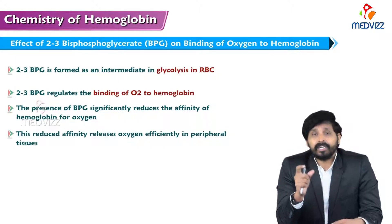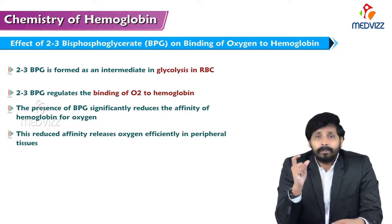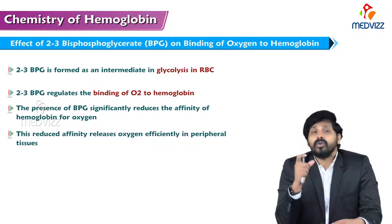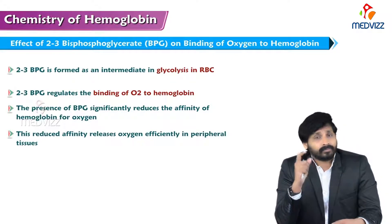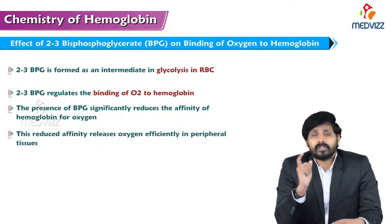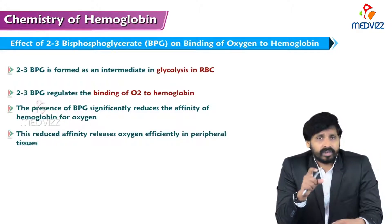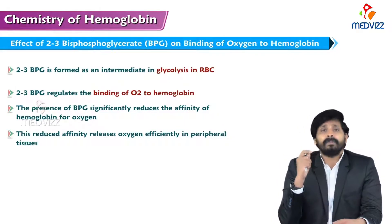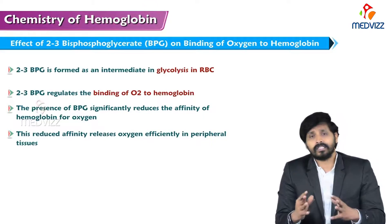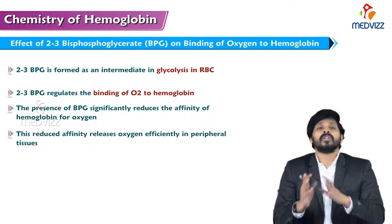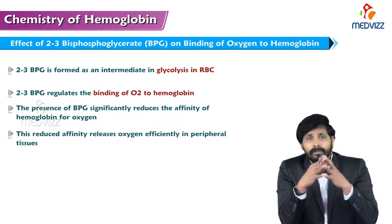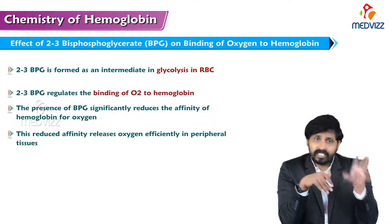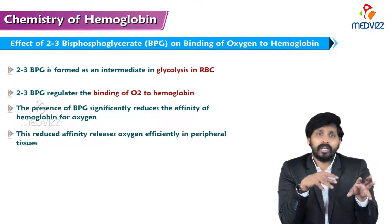This intermediate formation is not only about minimizing ATP generation — it also has an important functional role. As mentioned, the affinity of hemoglobin is more towards hydrogen ions and CO2 compared to oxygen. Similarly, 2,3-BPG produced inside the RBC has a higher affinity towards hemoglobin compared to oxygen.